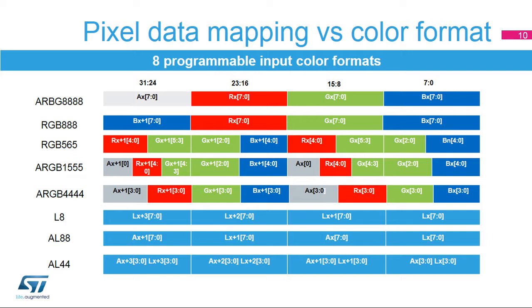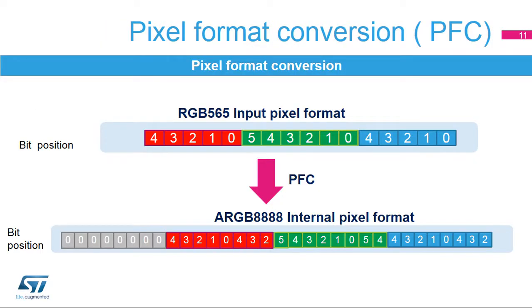The LTDC can be configured with up to eight programmable input color formats per layer. Direct color formats include ARGB8888, RGB888, RGB565, ARGB1555, and ARGB4444. Indirect color formats include L8 (8-bit luminance or CLUT), AL44 (4-bit alpha and 4-bit luminance), and AL88 (8-bit alpha and 8-bit luminance).